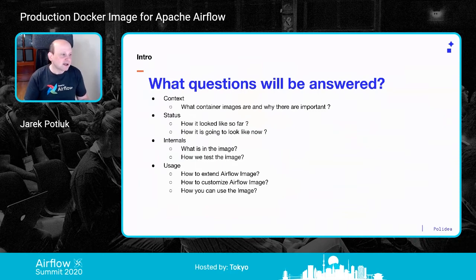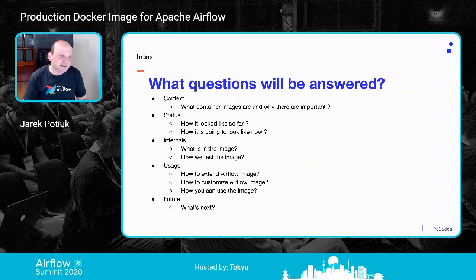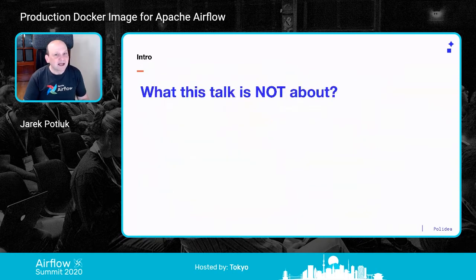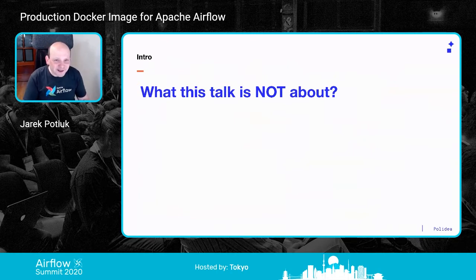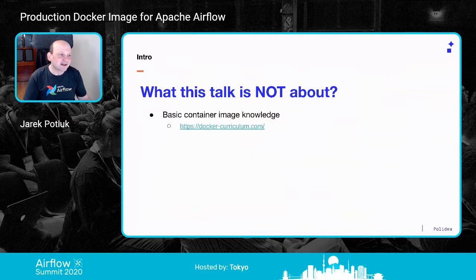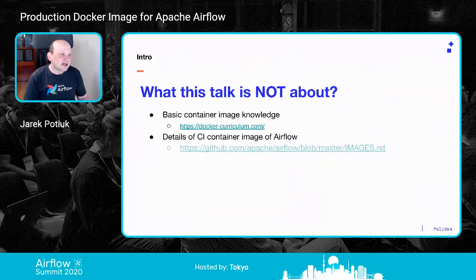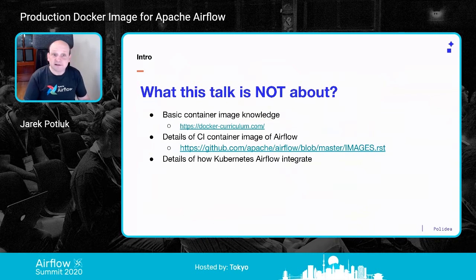We'll also cover how to deploy the image and what's next — plans we have. For those deciding whether to watch: this talk is not a basic introduction to containers and images. It also does not cover the CI container image in detail — we have two containers, production and CI, and I'm focusing on production. The CI image is a topic for a separate talk.